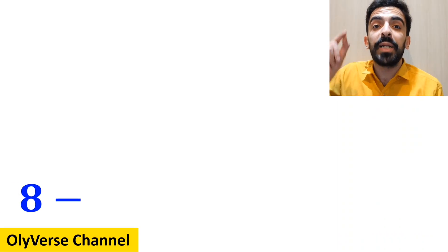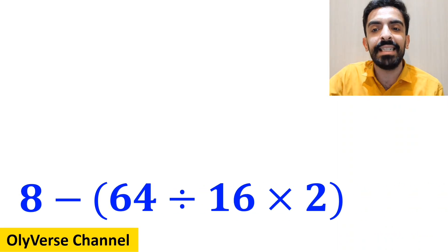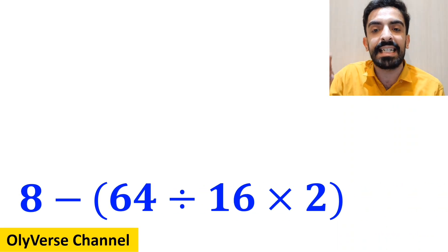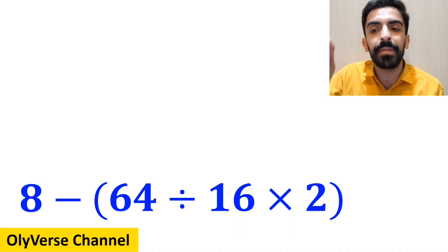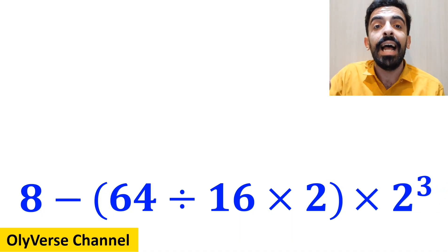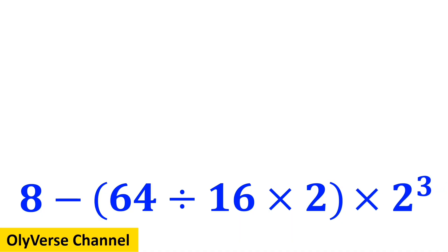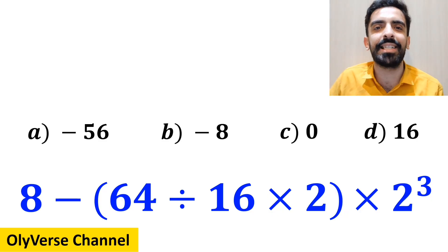What is the value of the expression 8 minus open parenthesis 64 divided by 16 times 2 close parenthesis, and multiplied by 2 cube? Which option do you think is the correct answer to this question?